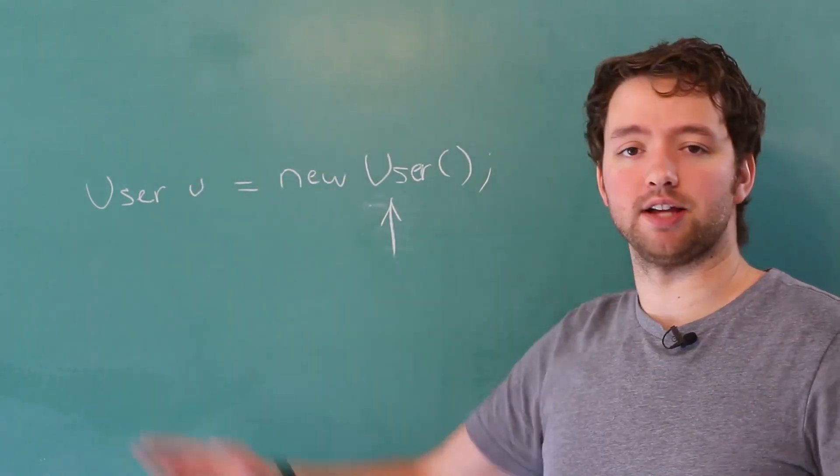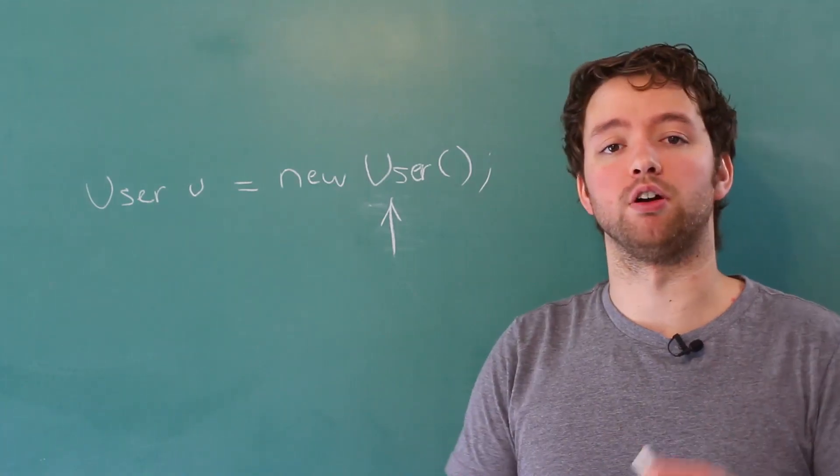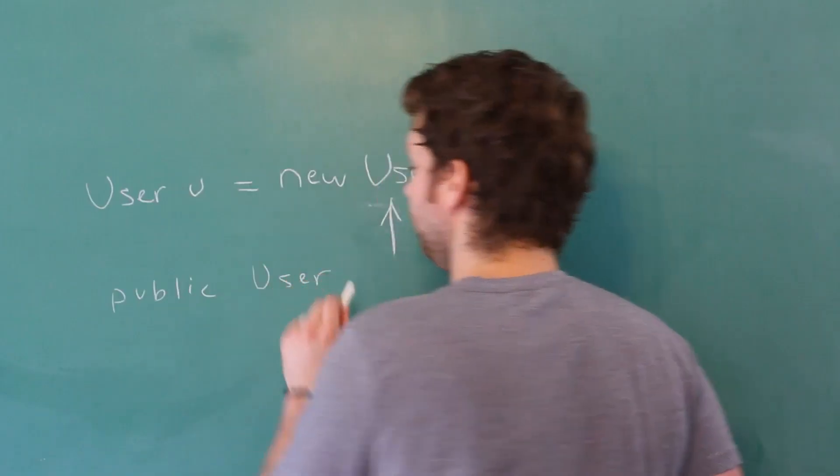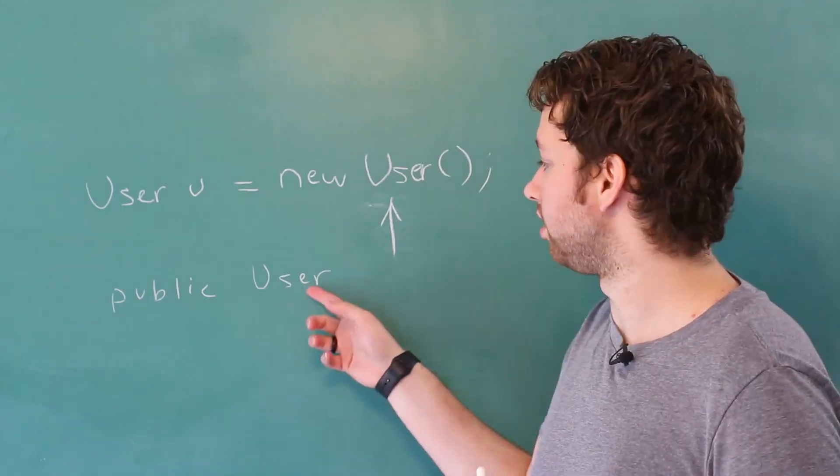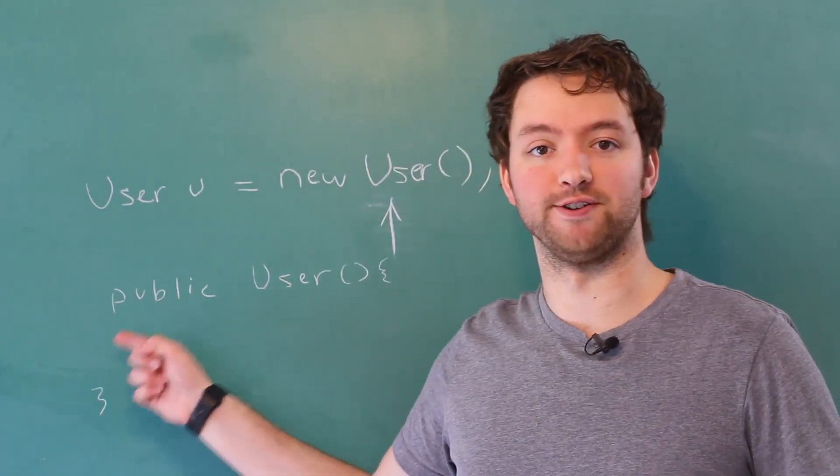Inside of the user class, the way we define this is exactly the same as a method, but there's no return or return type. The name has to match the class, so these match. And then in here we can define what the constructor does.